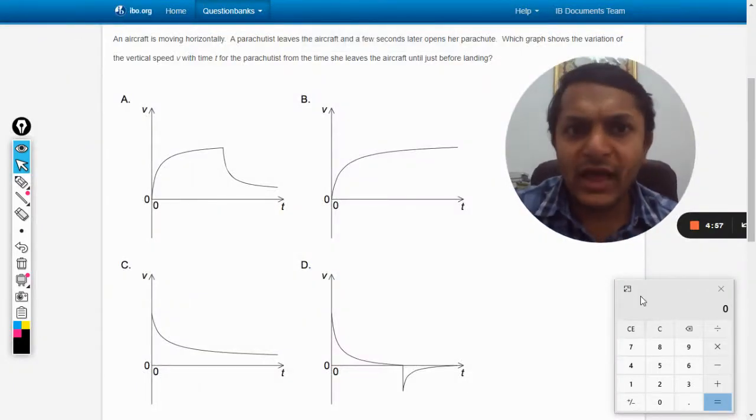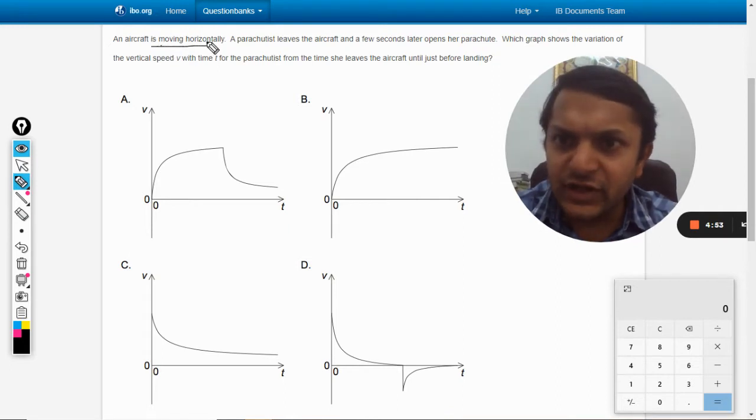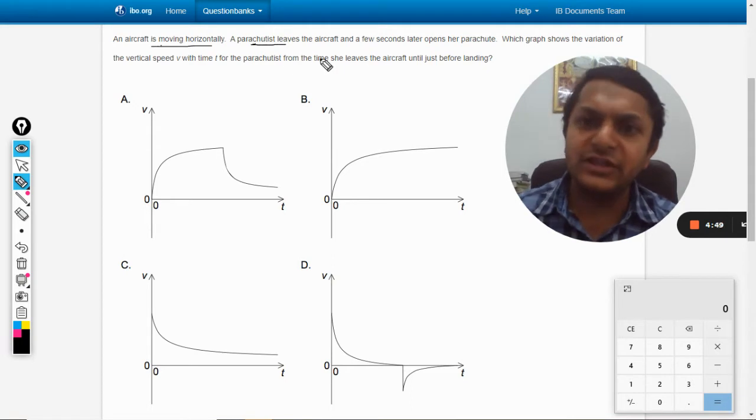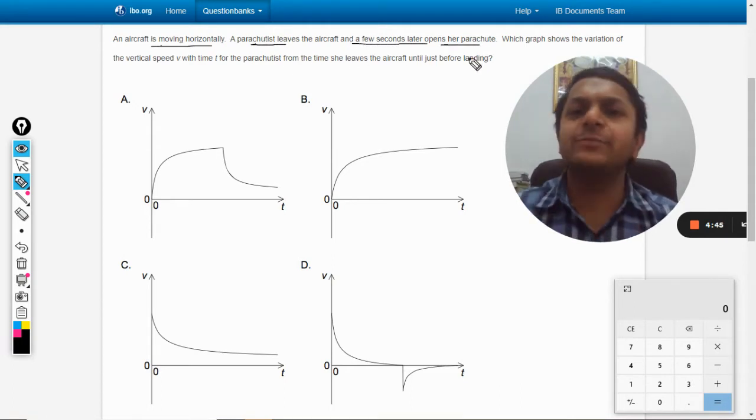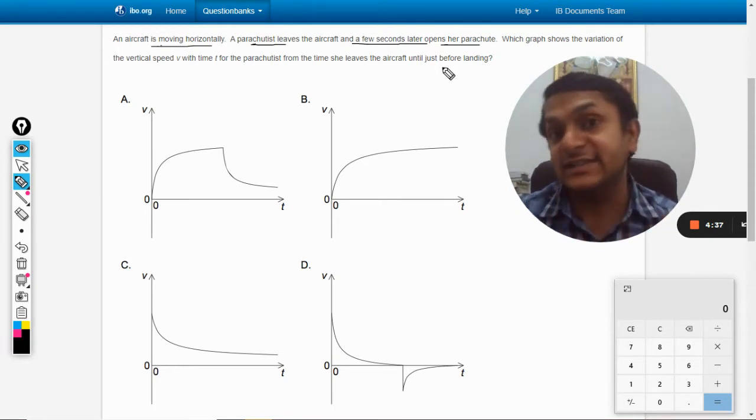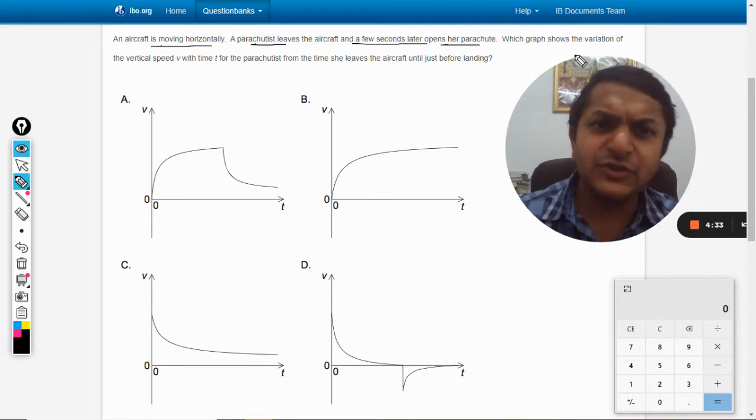In this question, an aircraft is moving horizontally. A parachutist leaves the aircraft and a few seconds later opens her parachute. For a couple of seconds it is a freely falling body, and the air drag is considered here. Which graph shows the variation of vertical speed v with respect to t for the parachutist from the time she leaves the aircraft until just before landing?